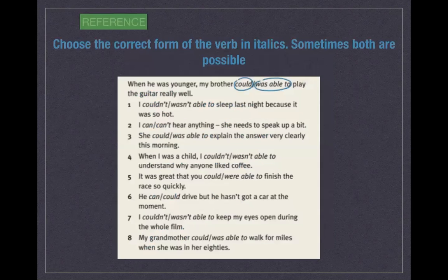Now choose the correct form of the verb — sometimes both are possible. For example: 'When he was younger, my brother could play the guitar really well' or 'was able to play the guitar really well' — here both variants are possible. Please stop the video and do the exercise.